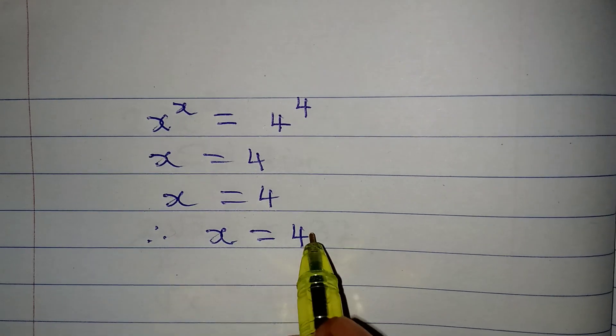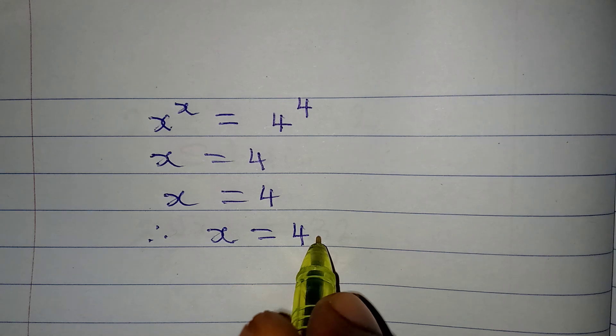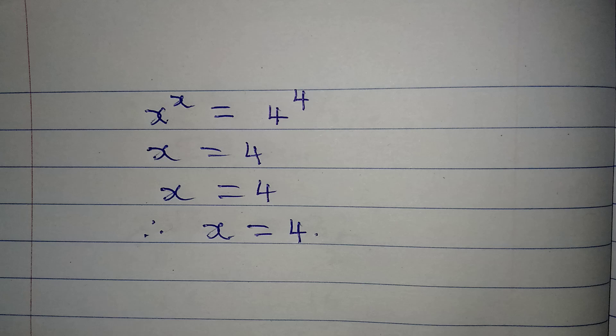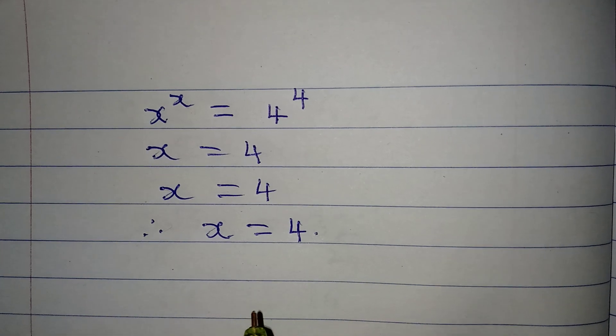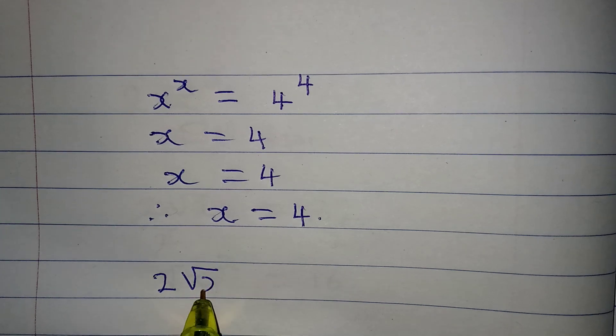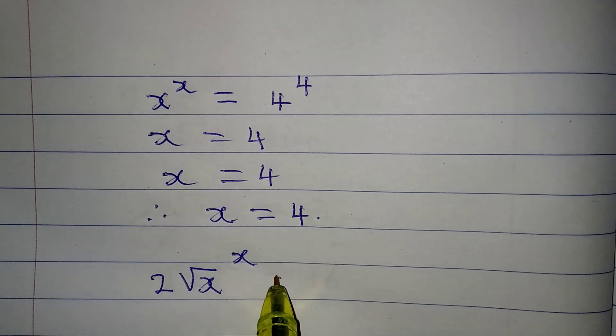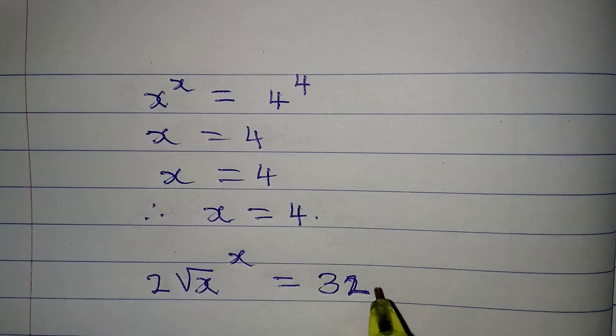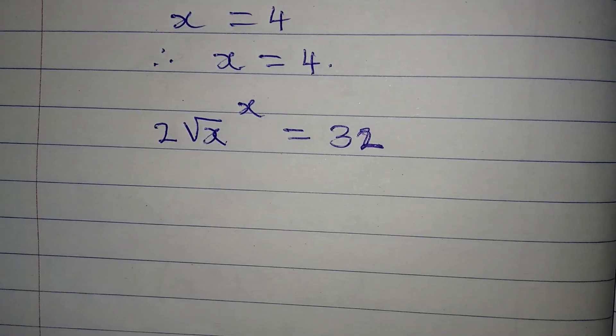Therefore we can conclude that x is equal to 4. Now this our conclusion may not be valid, so let's go back to the original equation and check. The original equation is 2√x^x = 32.